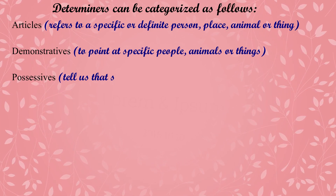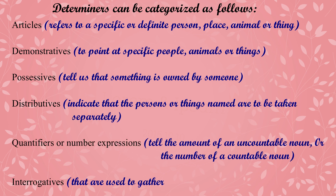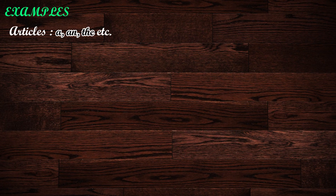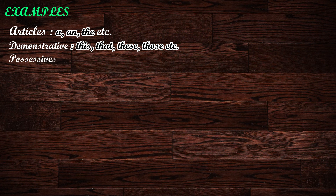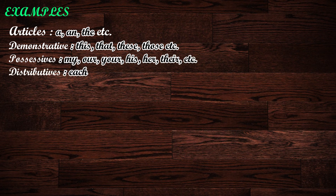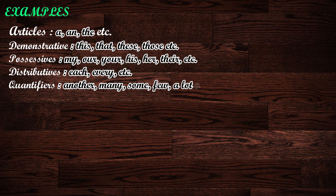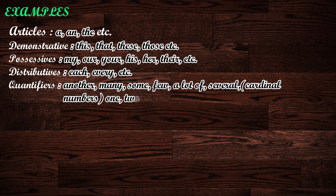Determiners can be categorized as follows: articles, demonstratives, possessives, distributives, quantifiers or number expressions, and interrogatives. Examples for articles: a, an, the, etc. Examples of demonstratives: this, that, these, those, etc. Possessives: my, our, your, his, her, their, etc. Examples of distributives: each, every, etc. Quantifiers: another, many, some, few, a lot of, several, and cardinal numbers like one, two, etc. Examples of interrogatives: what, which, etc.